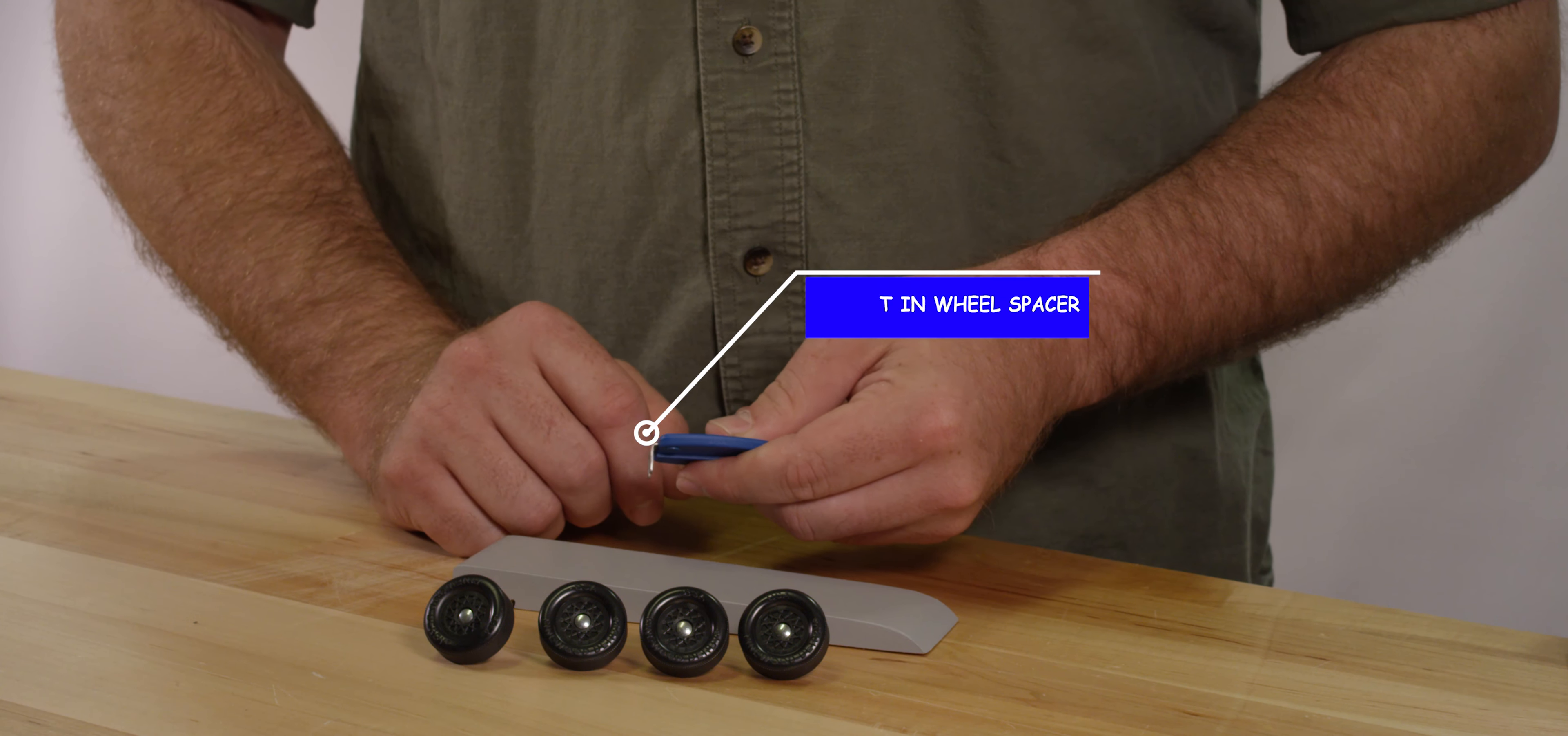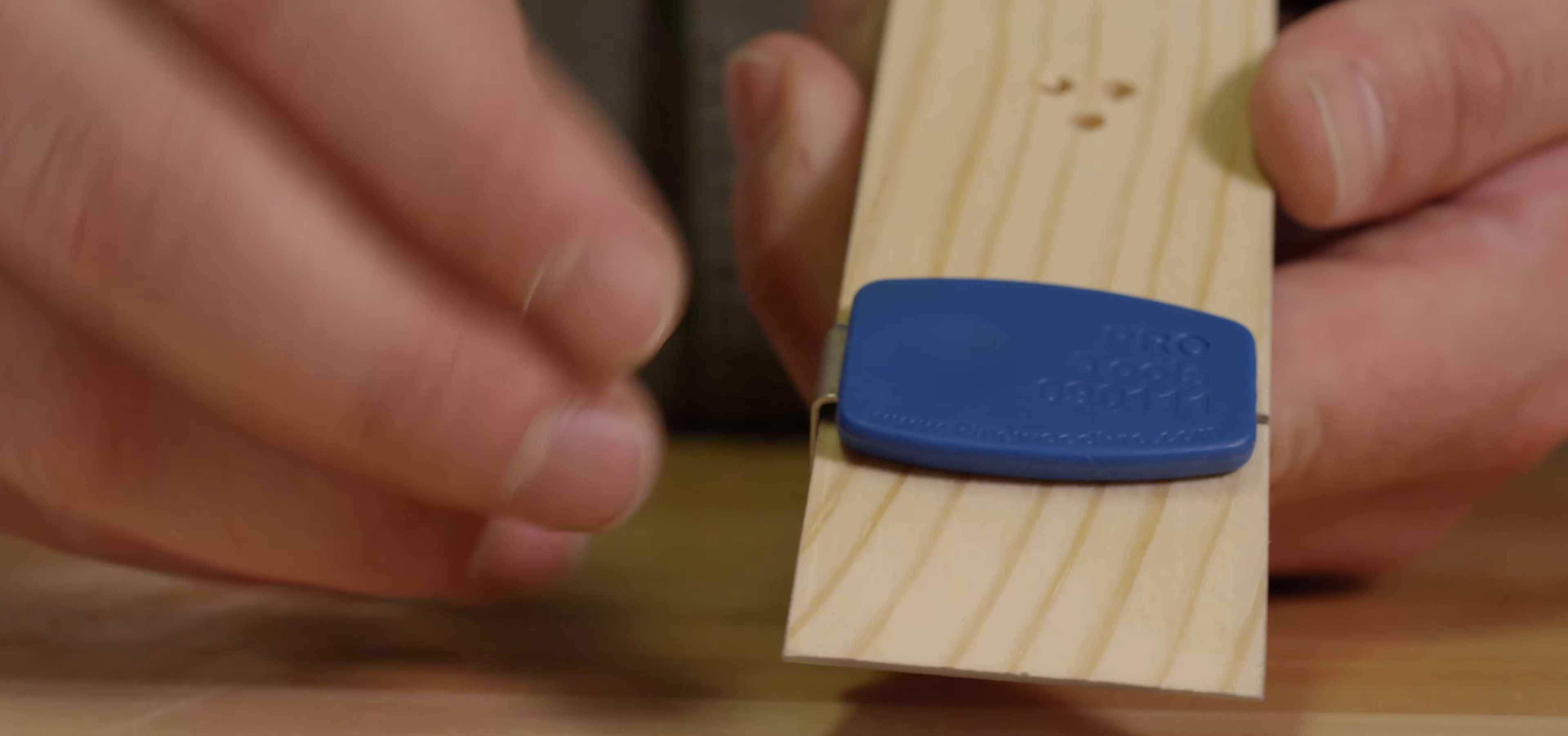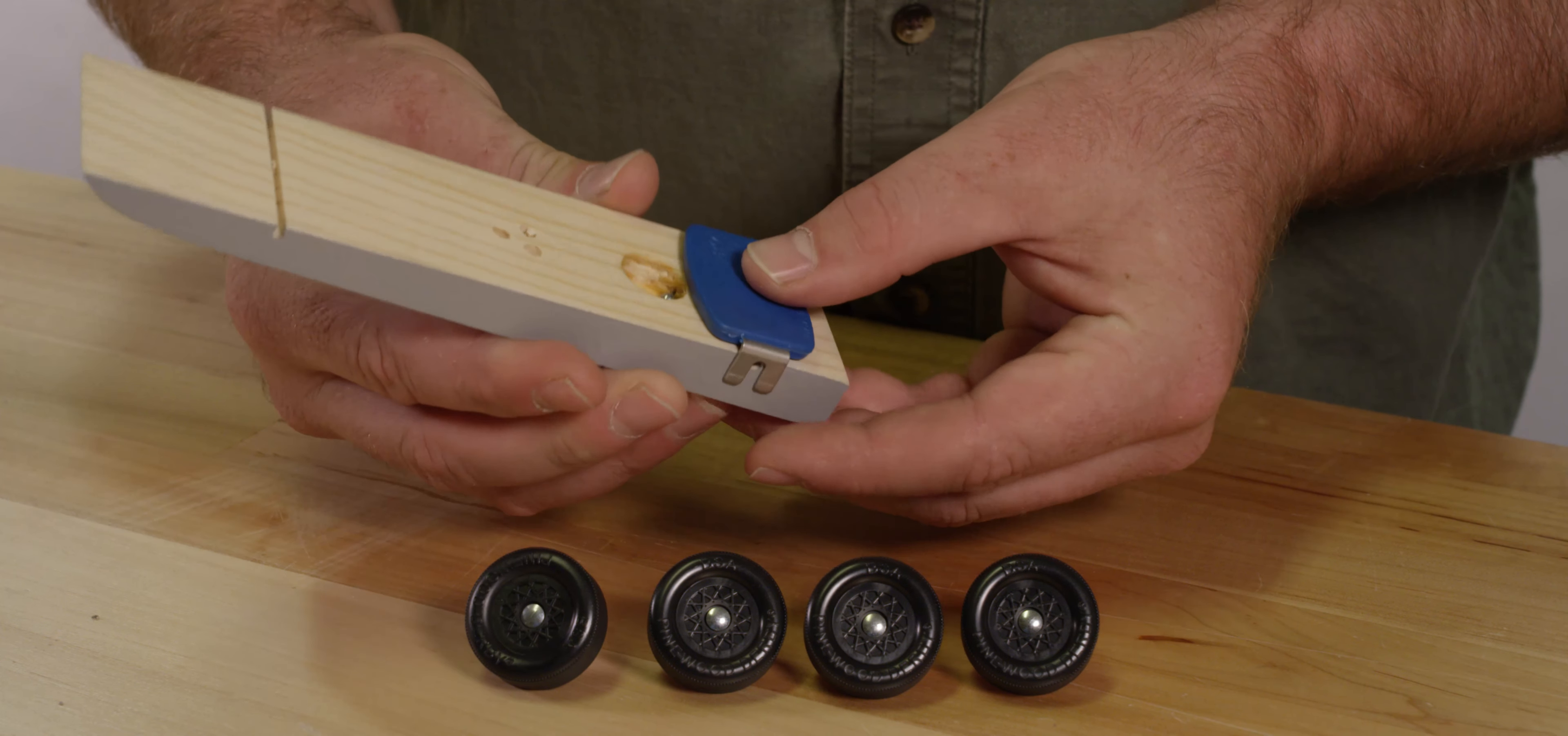The Pro Axle Guide includes a built-in wheel spacer for perfect spacing when you push your axles in. When you place the axle guide into the axle slot, push on the spacer to be sure it is snug against the block.